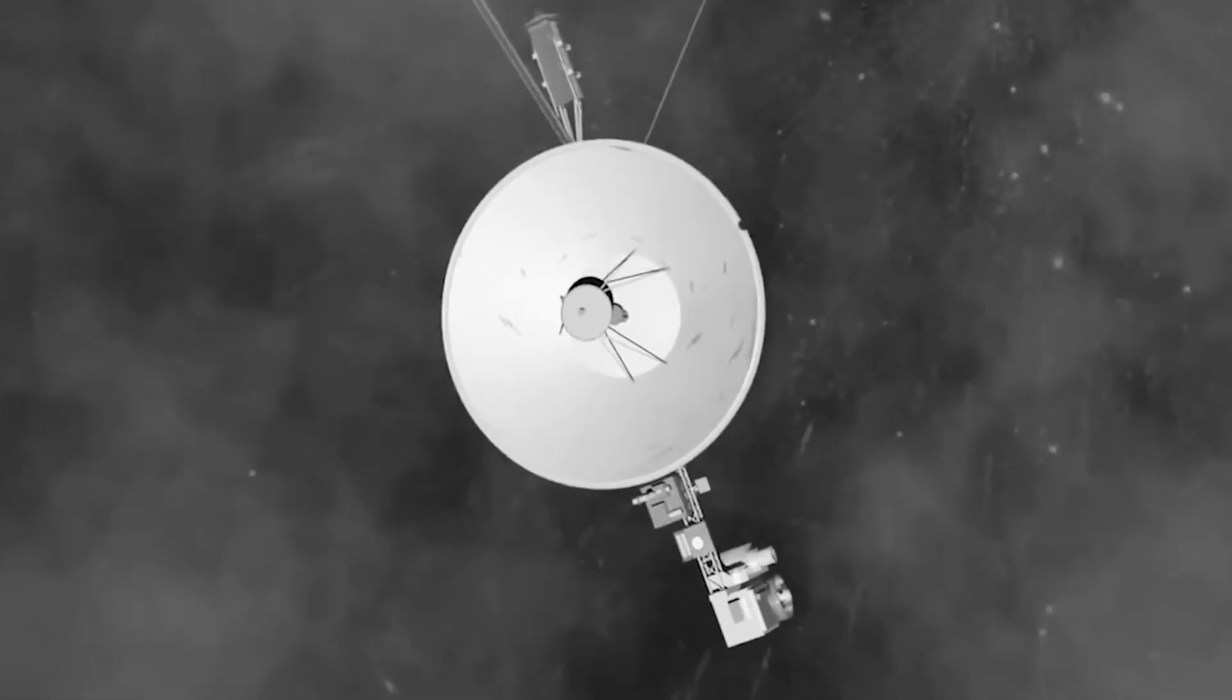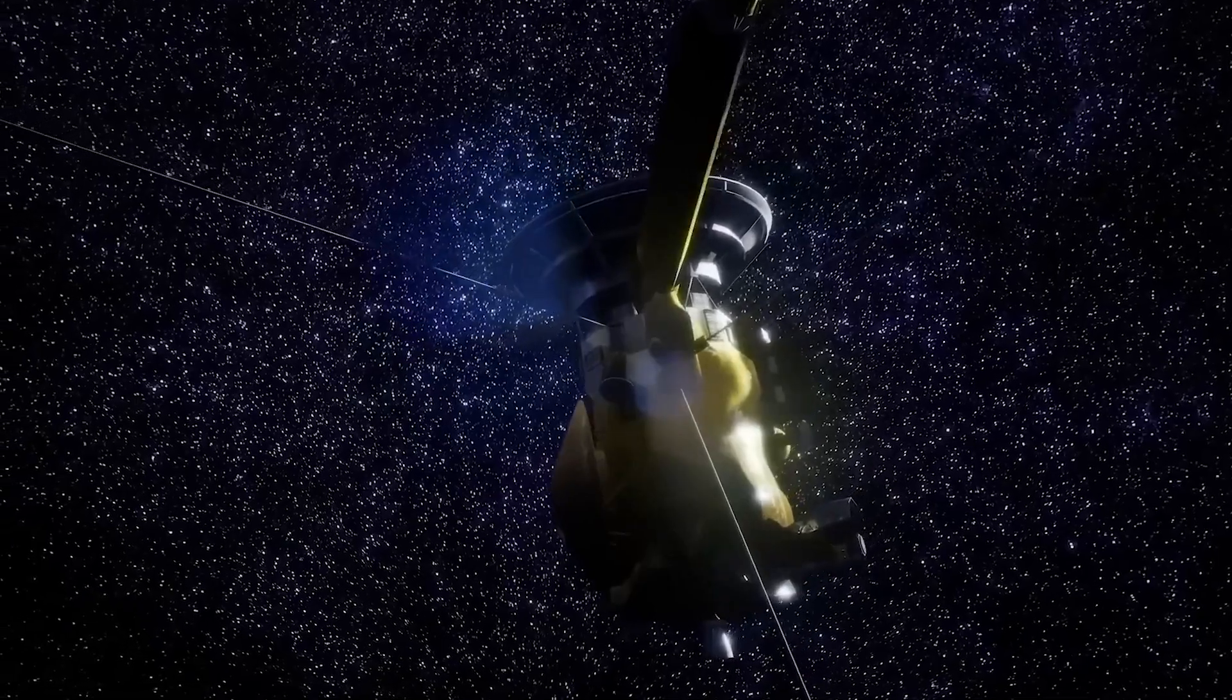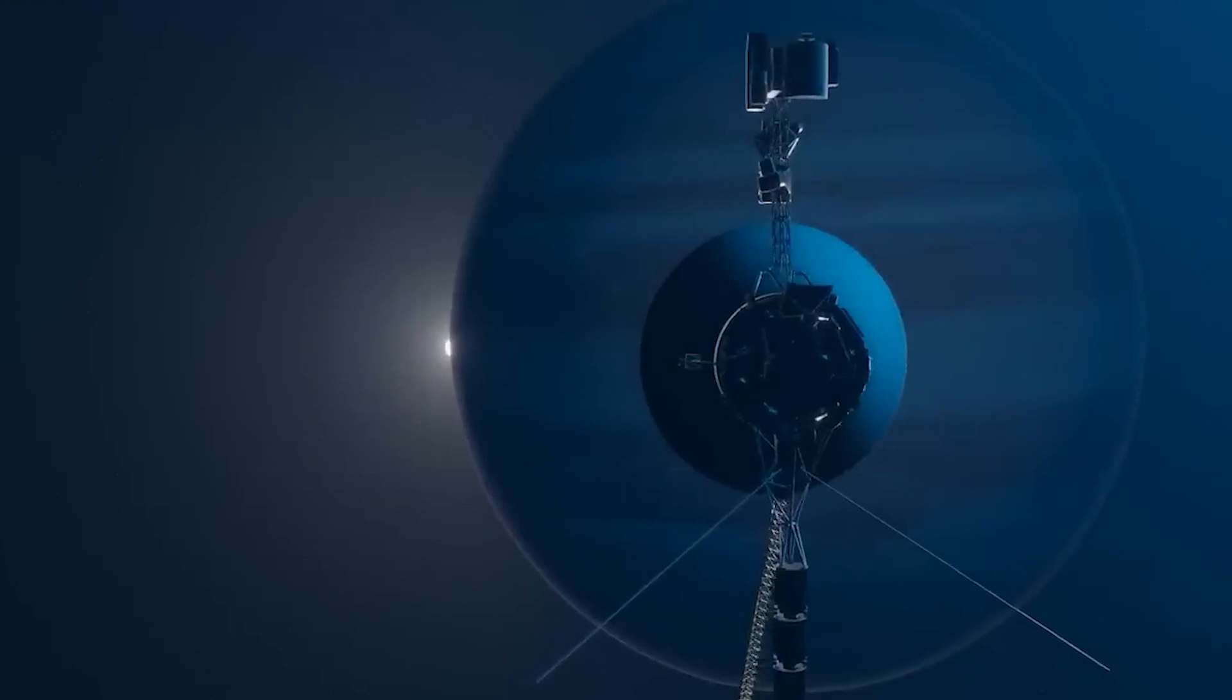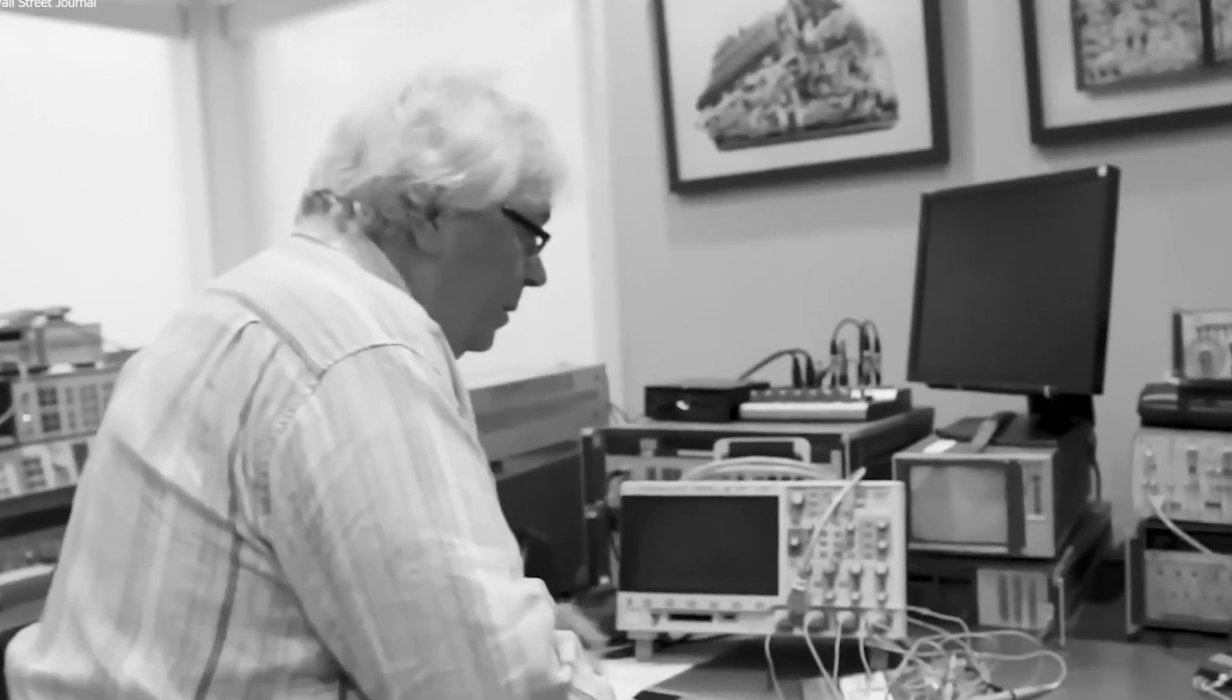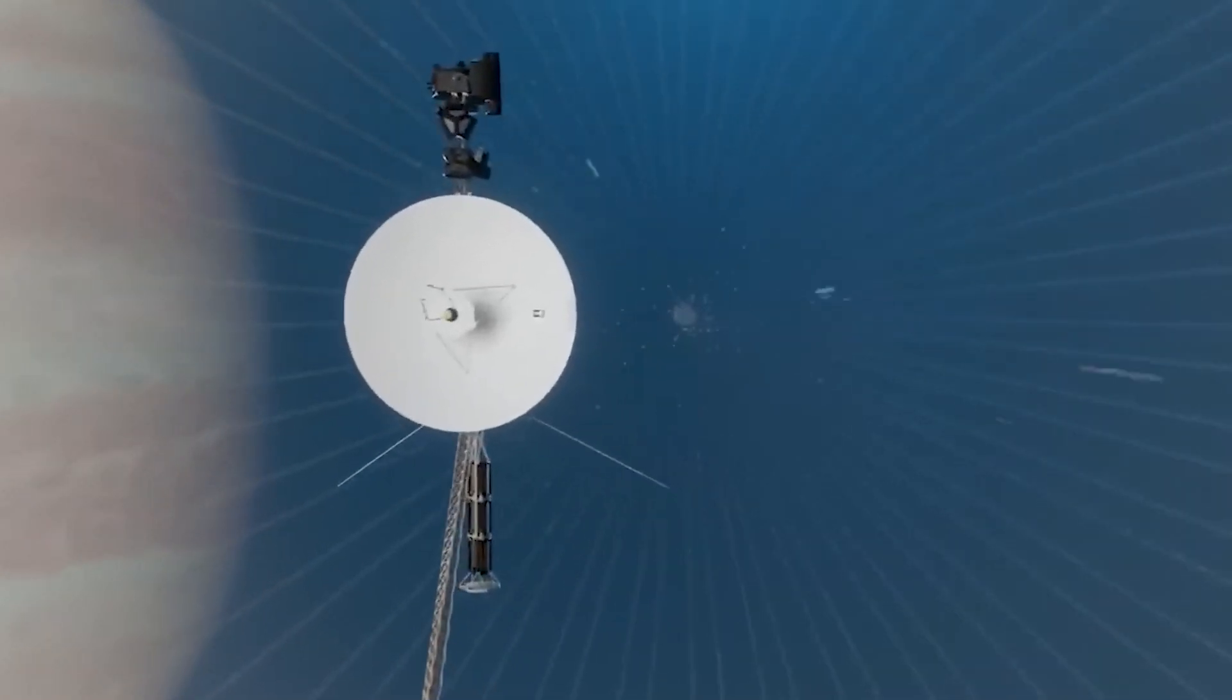Although the solution was low risk, it required a great deal of patience because of the significant delay caused by the distance between Earth and Voyager 1. Radio signals take nearly 22 hours to travel back and forth, so the troubleshooting process required careful coordination.